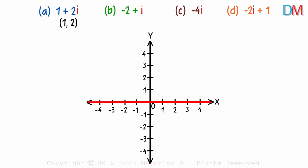Let's draw the Argand plane. The horizontal axis is the real axis and the vertical axis is the imaginary axis. To plot this point, we move one unit right on the real axis and two units up on the imaginary axis. This will be the point. Let's call it point A.